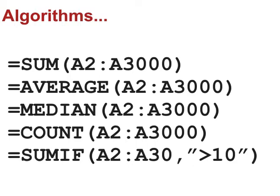The final part of computational thinking is algorithms, and algorithms are something you encounter in functions used in spreadsheets. A function is basically a recipe that allows you to perform some sort of action. For example, SUM is a function that adds up a series of numbers; AVERAGE calculates an average. Each of these words essentially represents a recipe — a series of steps that has been encoded in an algorithm — and it's quicker than you manually typing each of those steps.